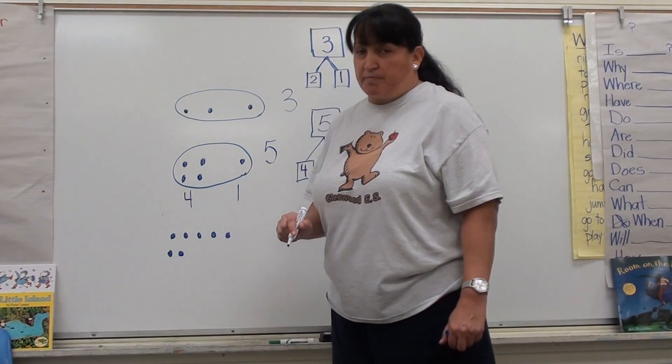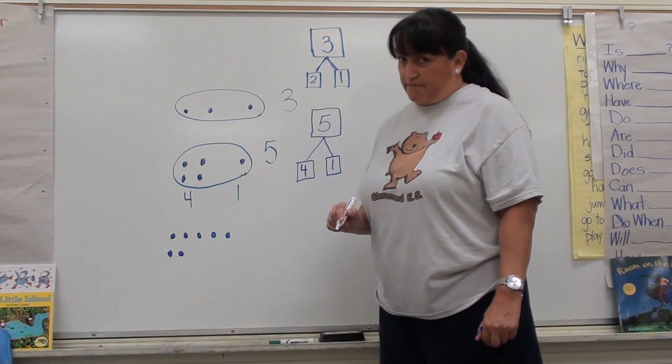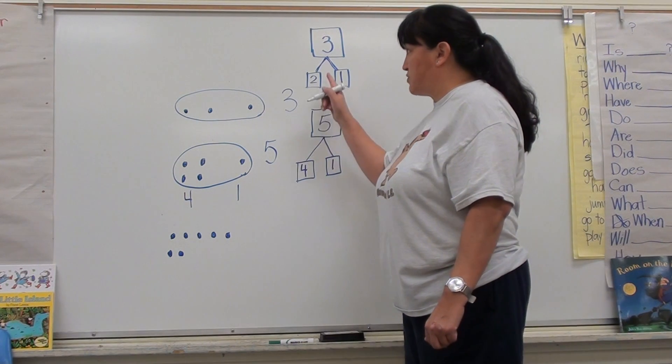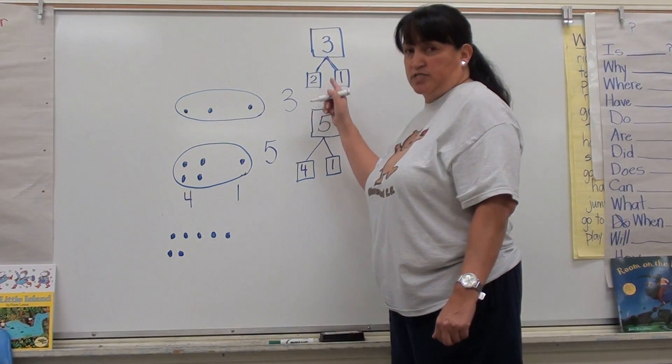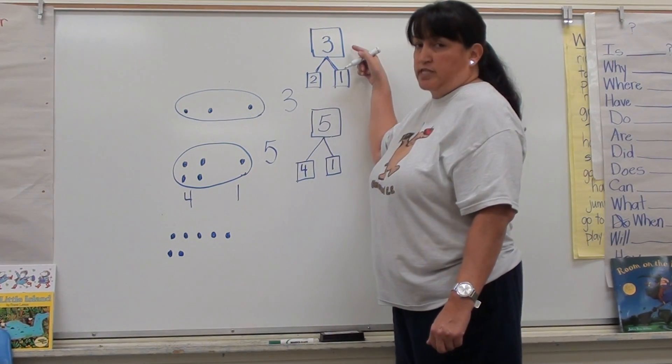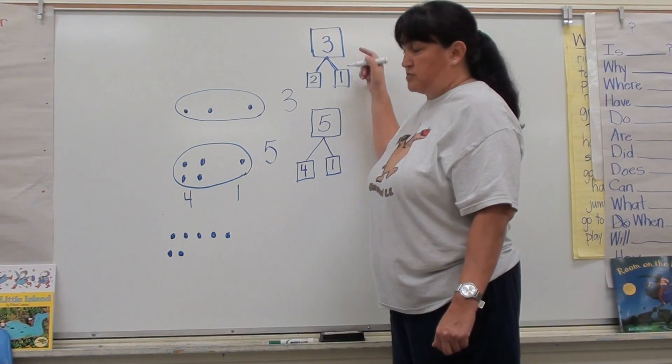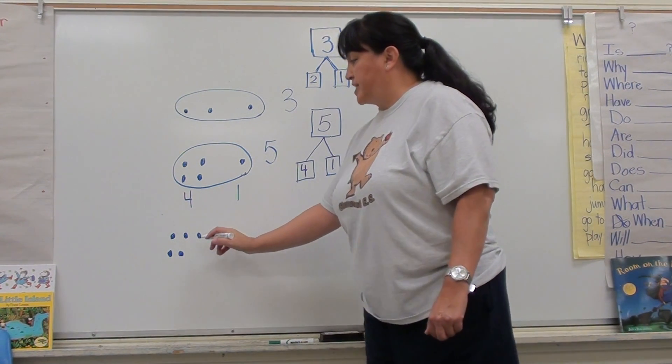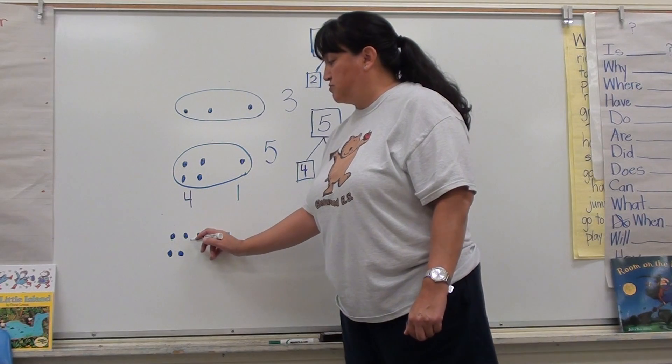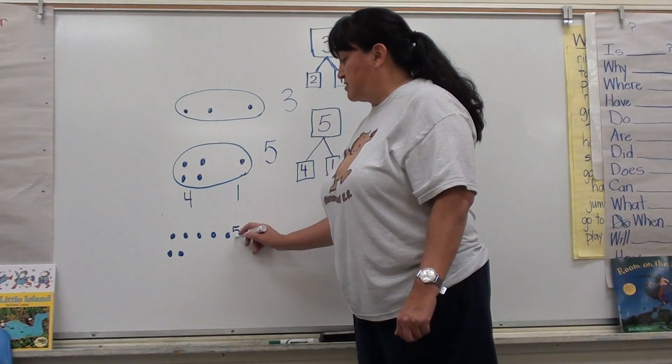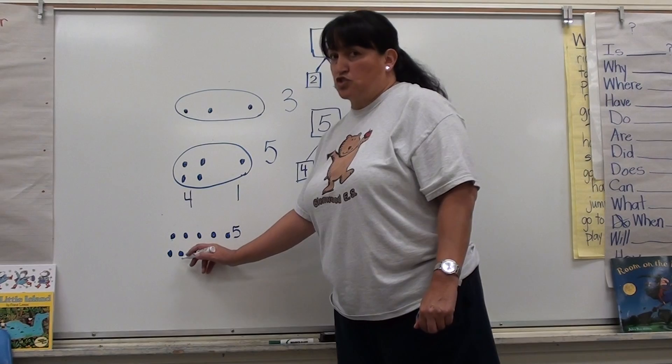This time I'm going to make my number bond look a little bit different. It'll have the same three boxes, two small ones for the parts, and one large one for the whole. My numbers again are one, two, three, four, five, and one, two.